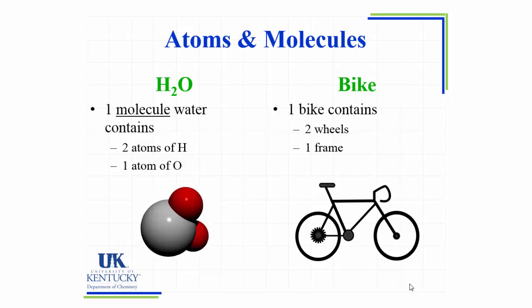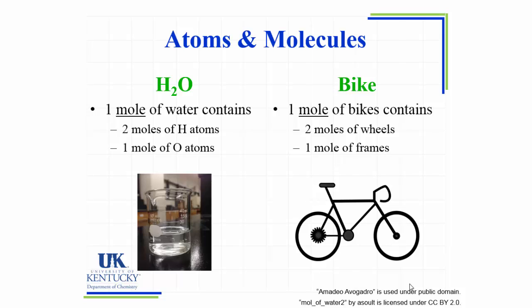When I look at a molecule of water, what I see is that each molecule contains two atoms of hydrogen and one atom of oxygen. Much like if I disassemble a bike, I'm left with two wheels and one frame. However, looking at individual molecules isn't always the most convenient way to look at relationships in compounds. Sometimes we need to look at it for much larger samples. The same ratio that applies at the molecular and atomic level also applies when we have a lot of those molecules.